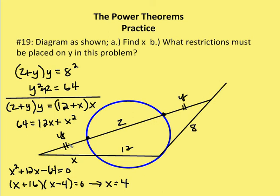I also have two secants, so I apply the secant-secant power theorem: (Y plus Z) times Y equals (12 plus X) times X. Since Z plus Y times Y equals 64, I substitute to get 64 equals 12X plus X squared. Using the zero product property: X squared plus 12X minus 64 equals zero. Factoring gives (X plus 16)(X minus 4) equals zero, so X equals negative 16 or 4. Since X cannot be negative, X equals 4.